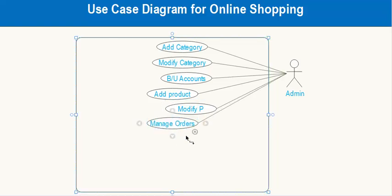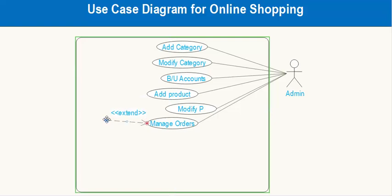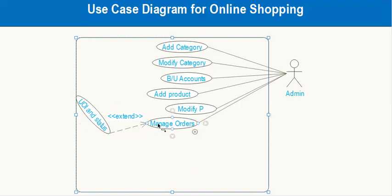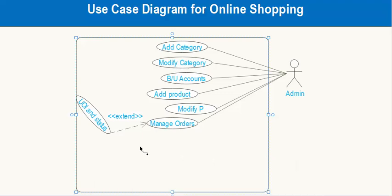The 'manage orders' use case extends 'update order info and status'. Extend means it may or may not happen, but include means it must happen — you must implement that. We will use include later. Now let's create another actor which is the system.